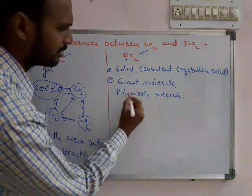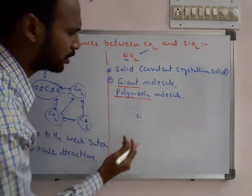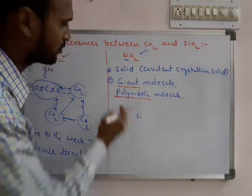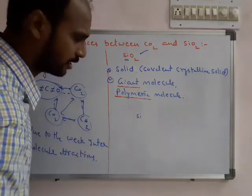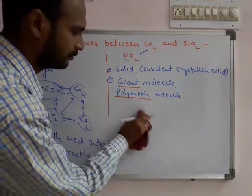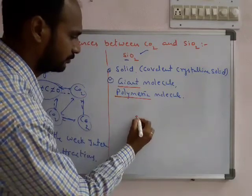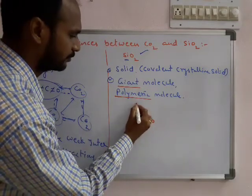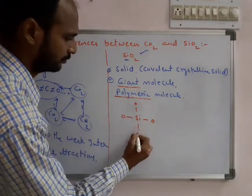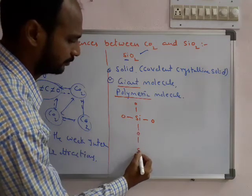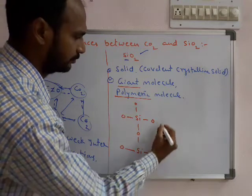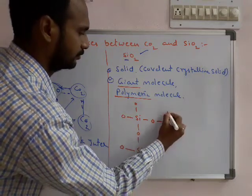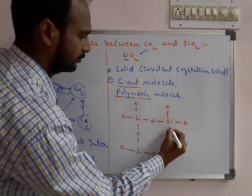How does its structure look? As you see, this SiO2 structure is polymeric. Many numbers of such molecules are connected together - the many number of giant molecules are connected together.